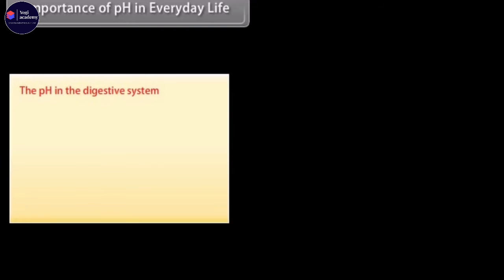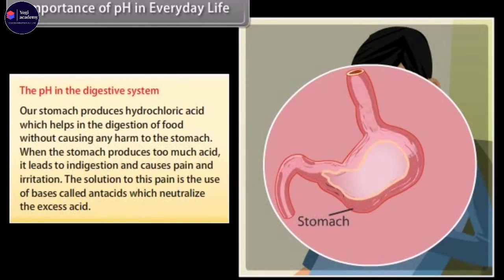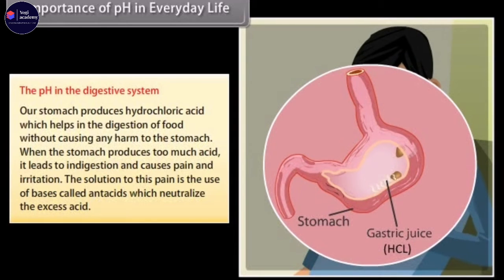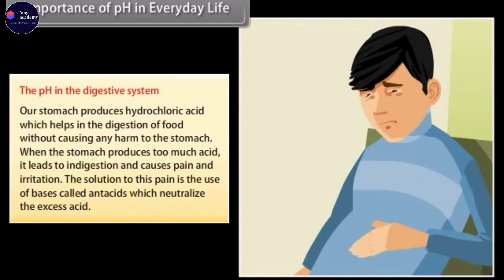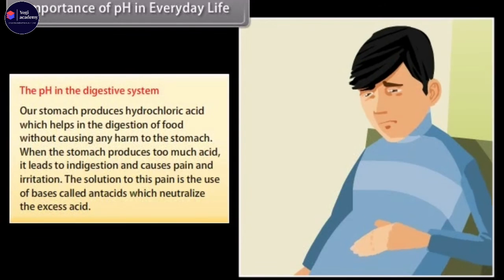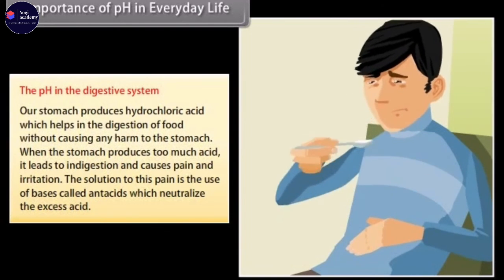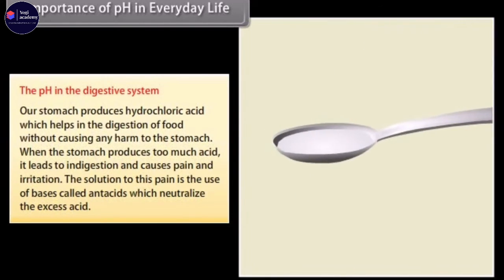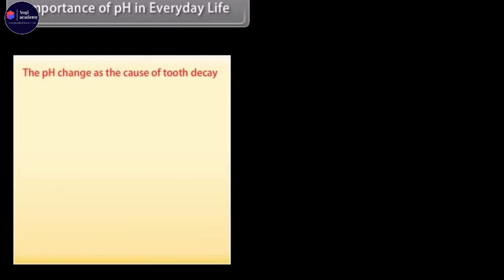Our stomach produces hydrochloric acid which helps in the digestion of food without causing any harm to the stomach. When the stomach produces too much acid, it leads to indigestion and causes pain and irritation. The solution to this pain is the use of bases called antacids which neutralize the excess acid.